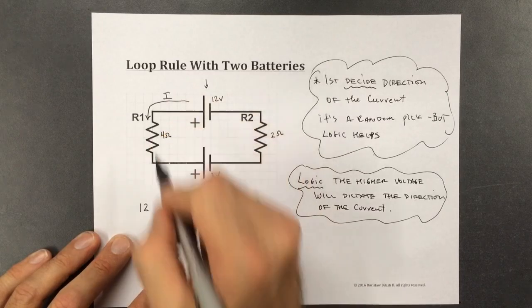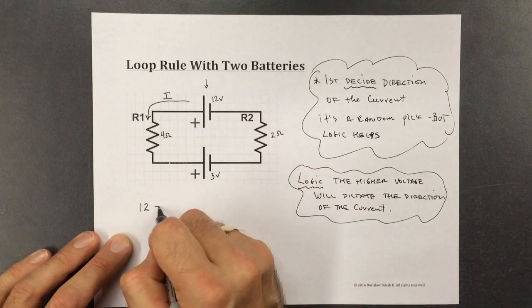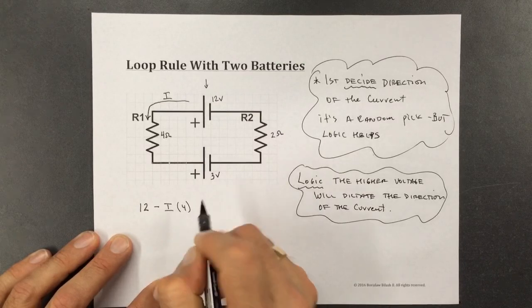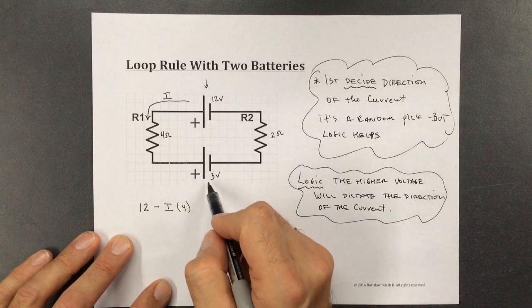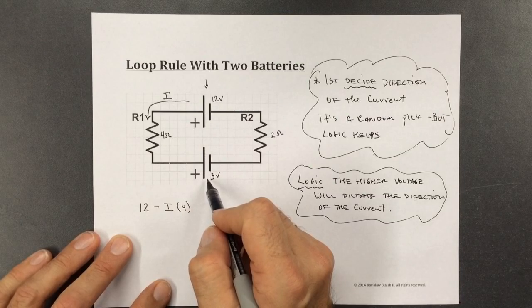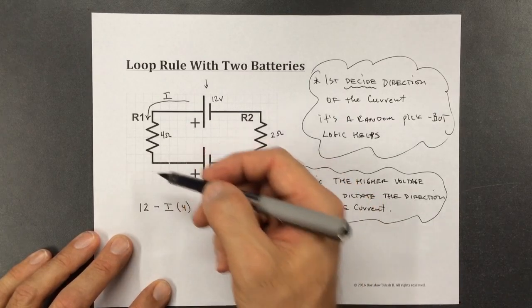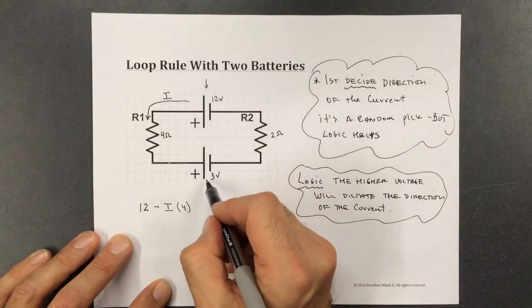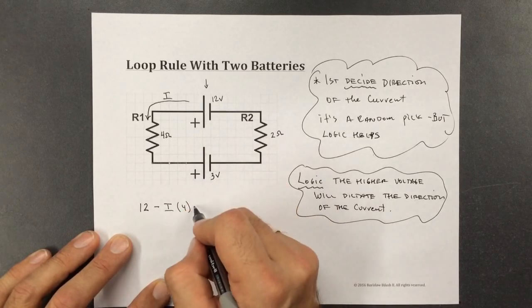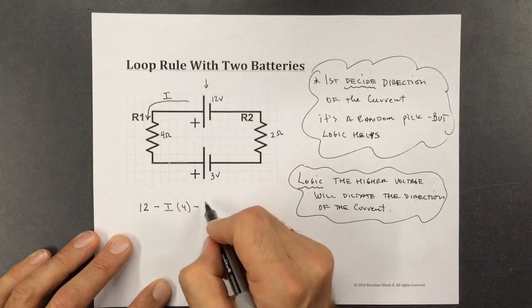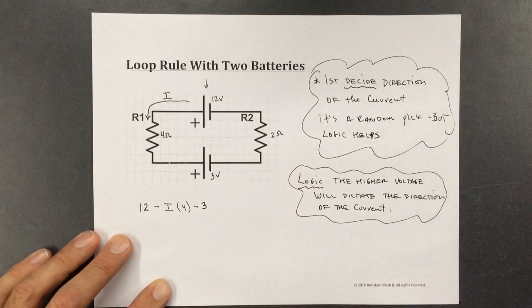And then we arrive at R1. So we'll have a voltage drop of I times 4. And then we're going to hit this battery right here. And since the current is in the opposite direction, the push of the 3 volt battery is in the opposite direction, that's going to be like a voltage drop. So that'll be minus 3.